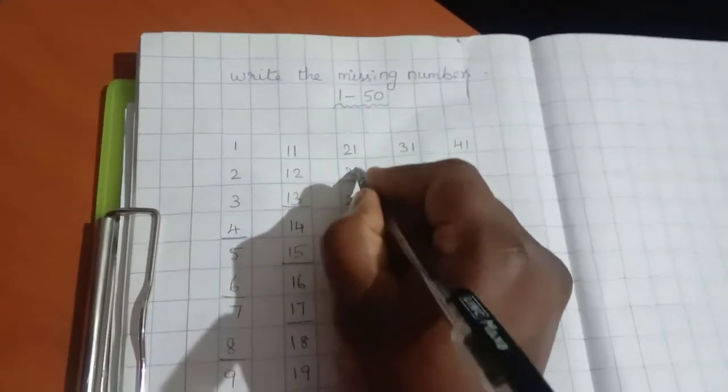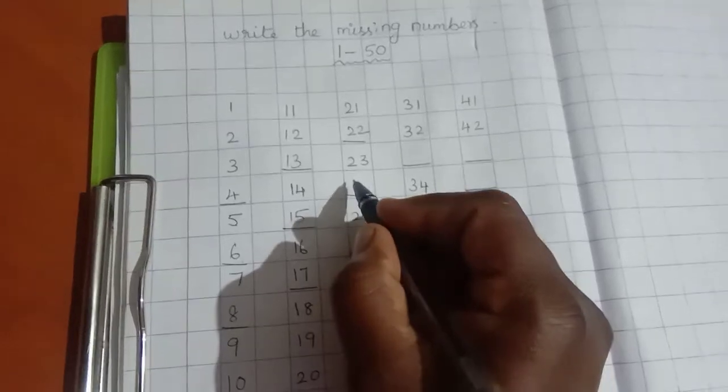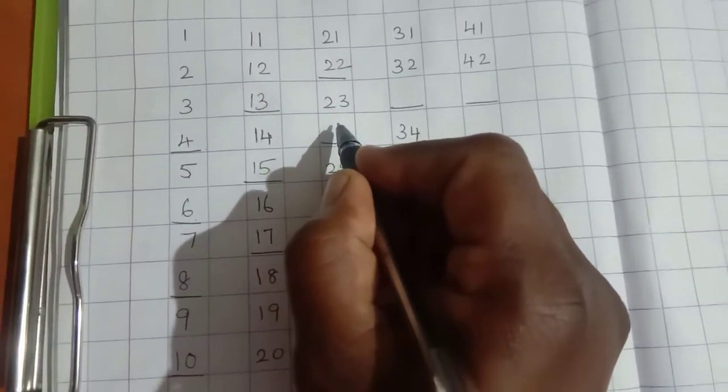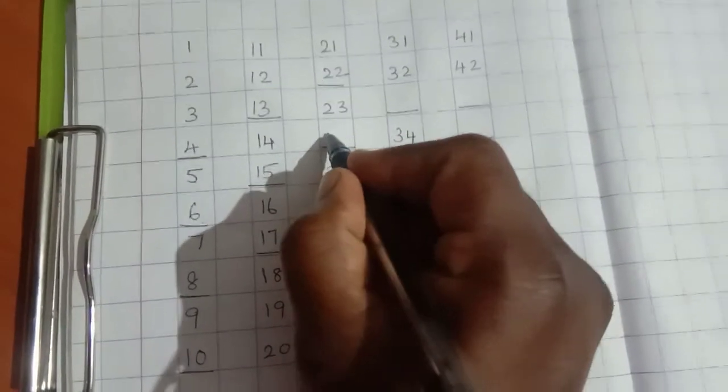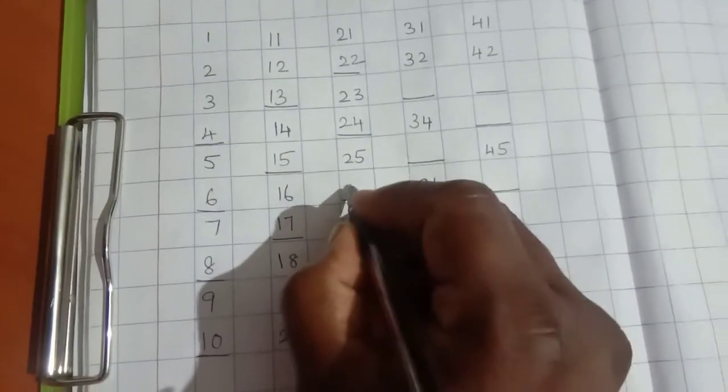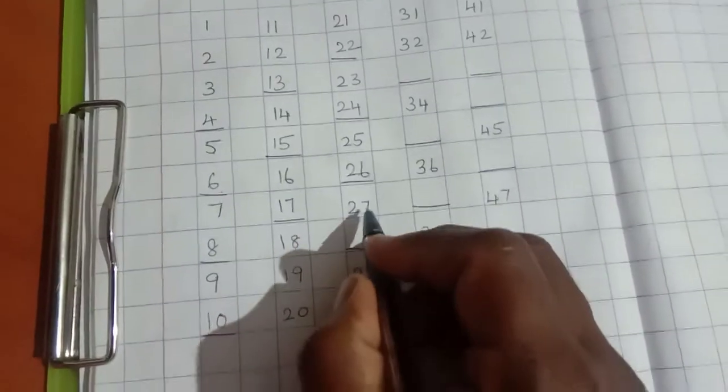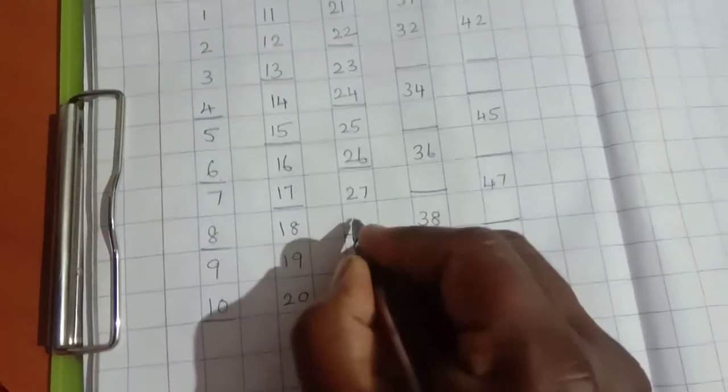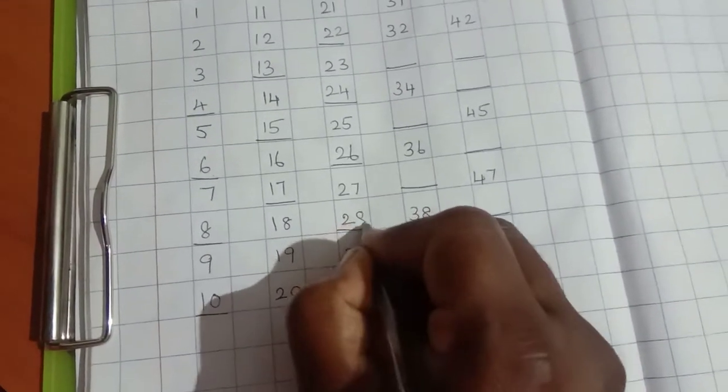21. After 21 comes 22. After 22 comes 23, after 23 comes 24, 25. After 25 comes 26, 27. After 27 comes 28.